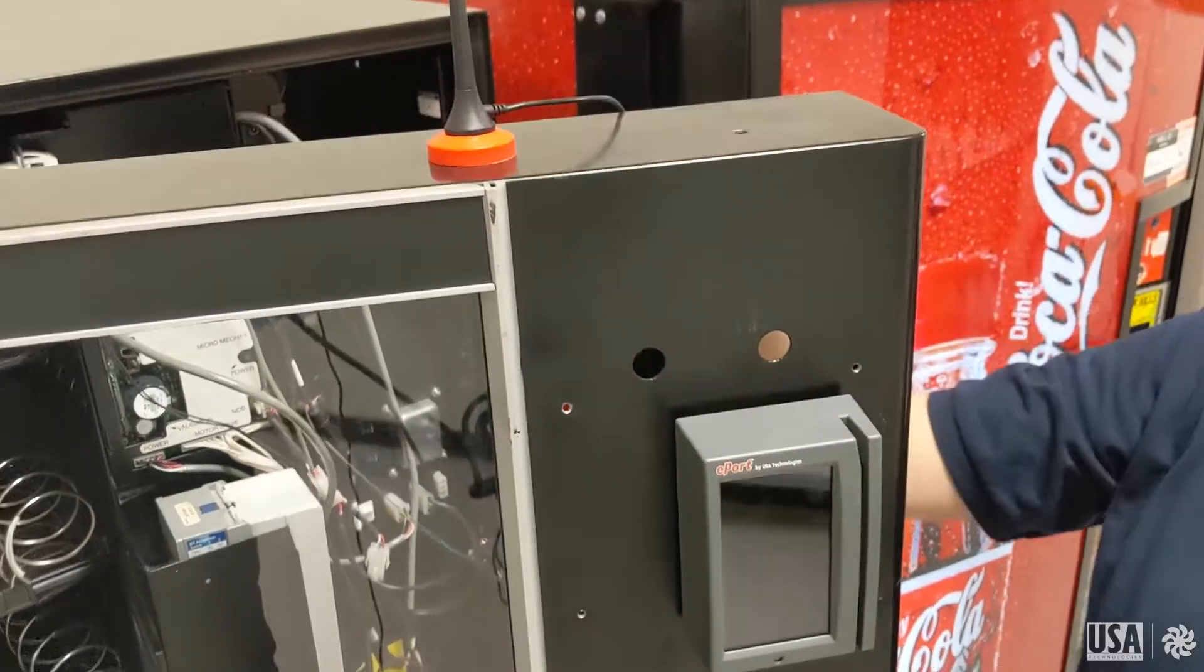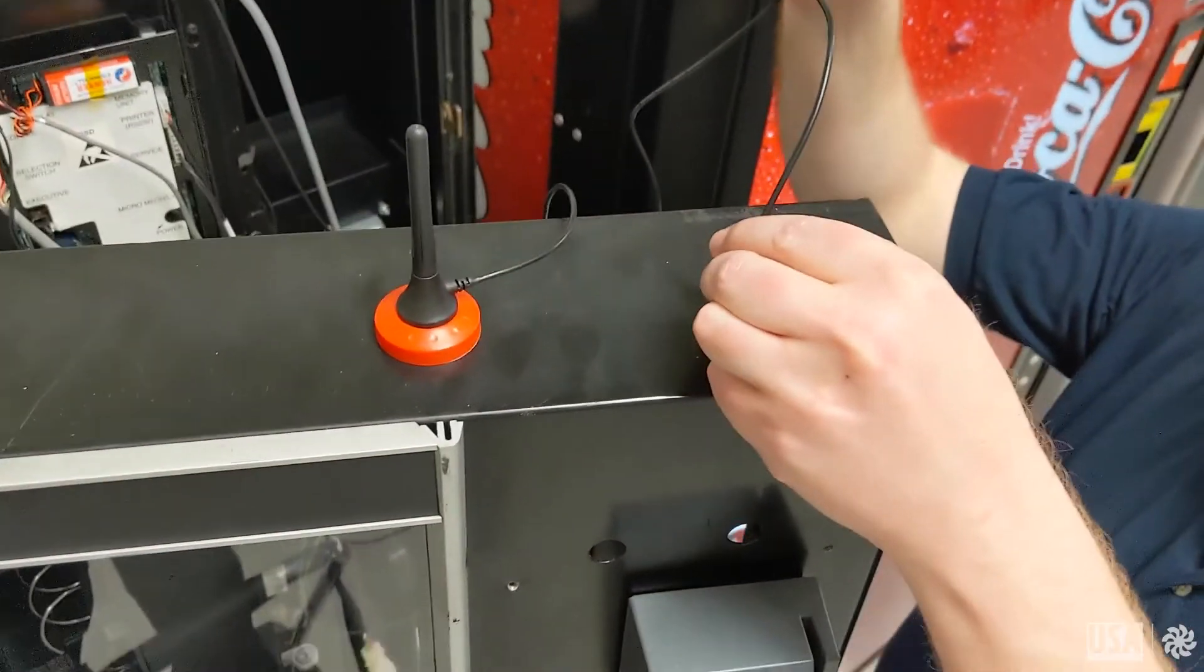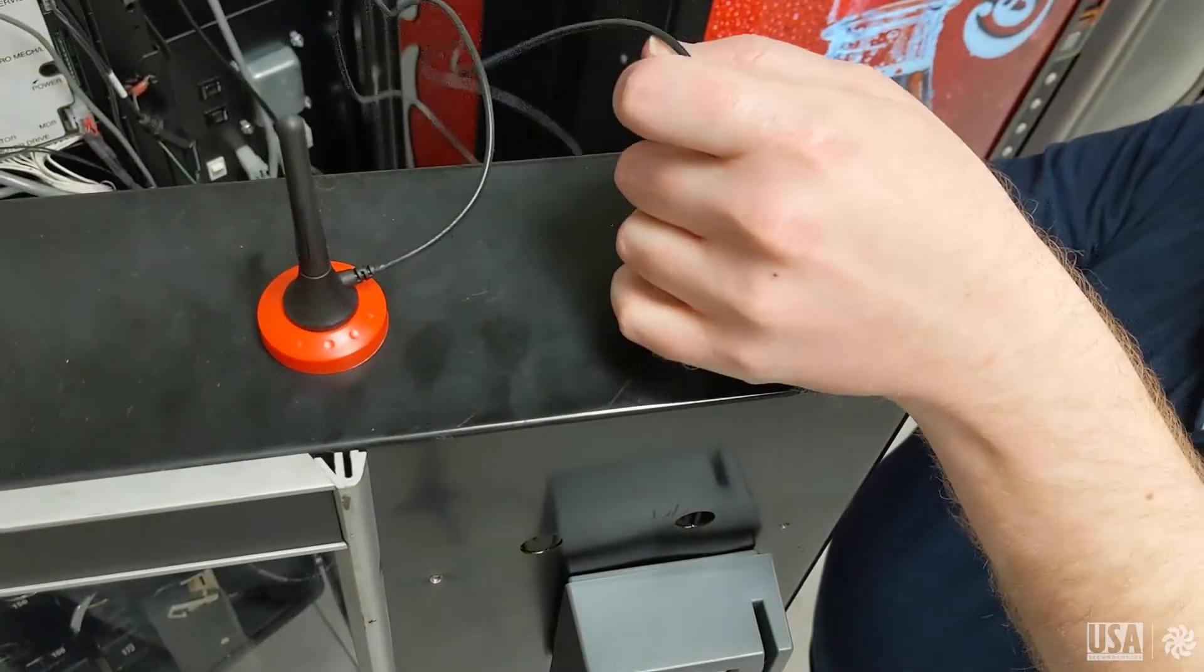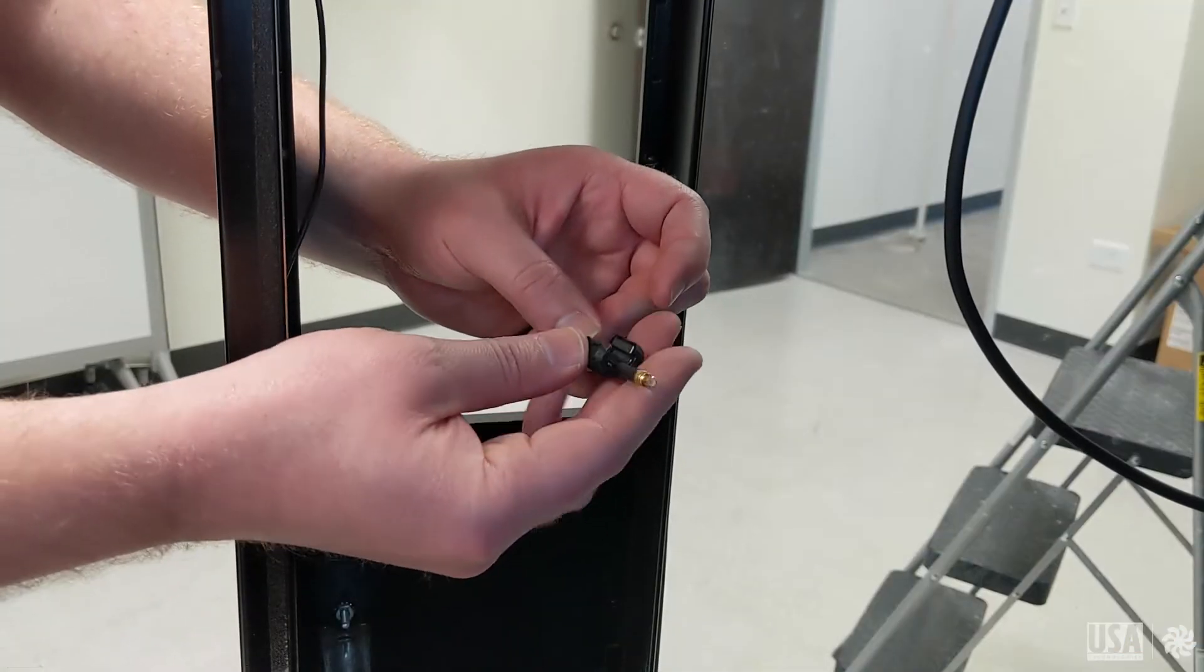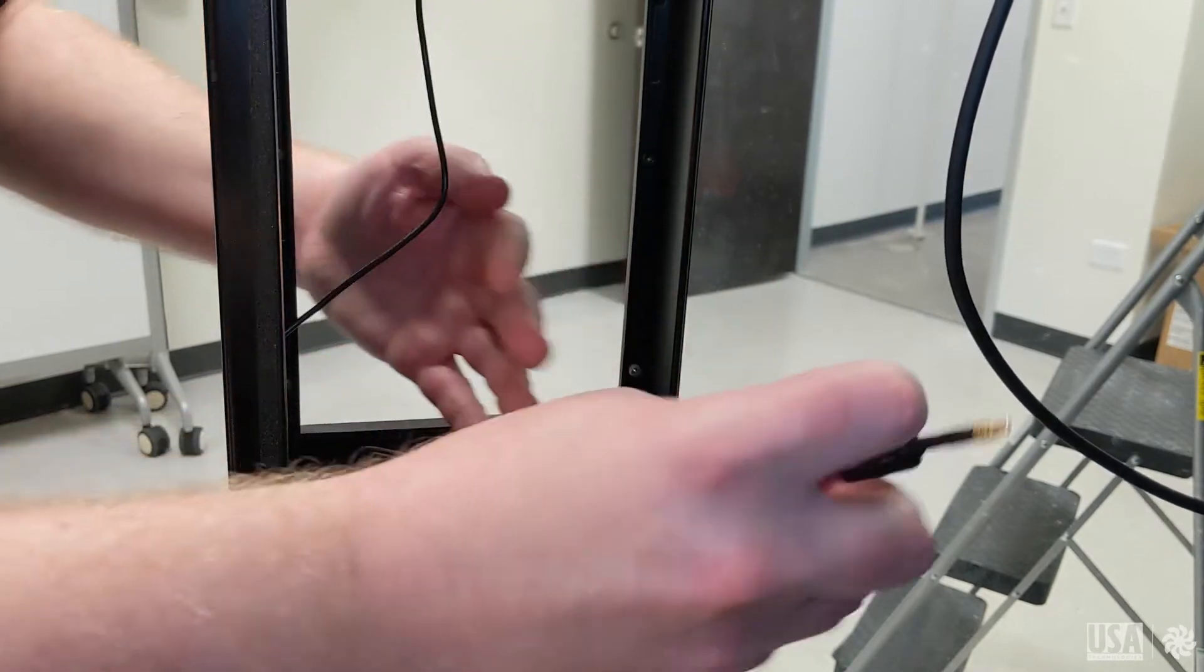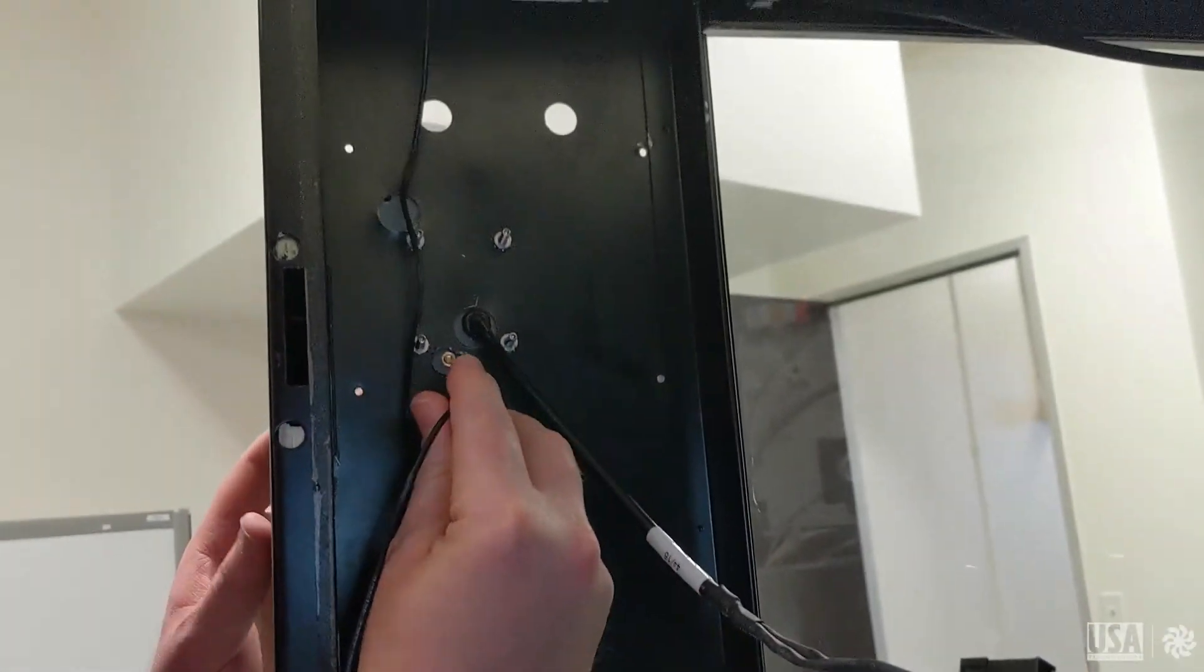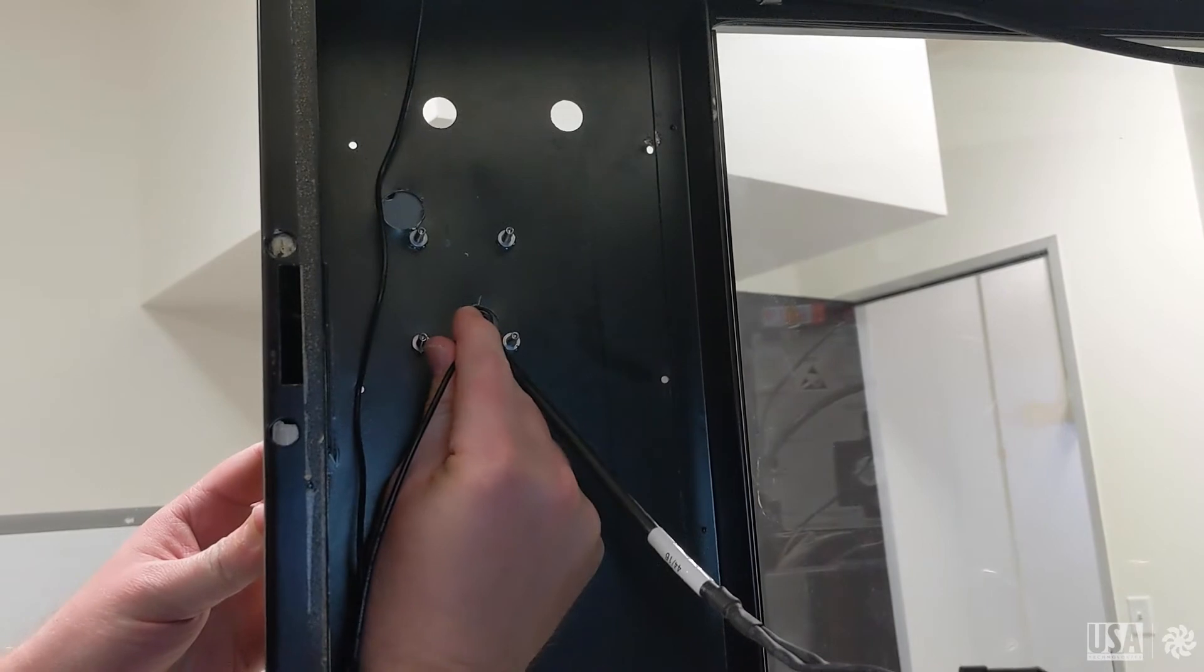To install the antenna, look for a pre-drilled hole or drill your own hole with the one-quarter inch bit on top of the machine. Thread the wire to the inside, and then attach the RF blocker clip to the end of the cable. Plug the cable into the interactive unit and allow for the antenna cable to hang free and clear on the inside of the machine.